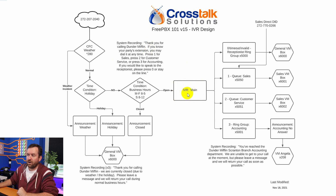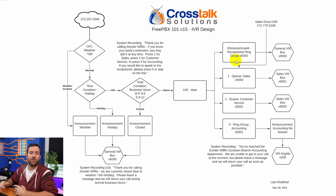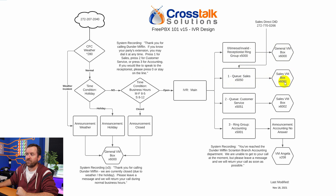From the IVR, we basically have four different options. If you press zero, or if you don't press any digits at all and timeout, or if you press an invalid digit, all three of those options are going to bring you to our receptionist ring group, which if not picked up will end up in the general voicemail box. If you press option one for sales, that's going to ring our sales queue, which again if not picked up or if you timeout of that queue, we're going to end up at the sales voicemail box — a separate voicemail box just for sales.